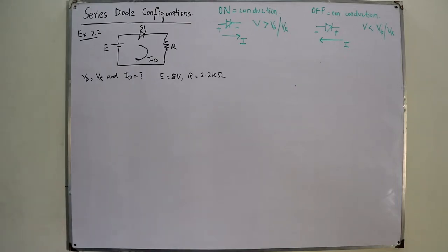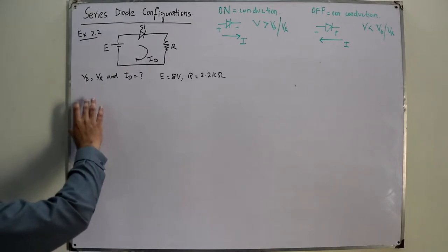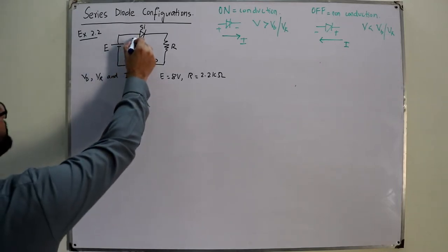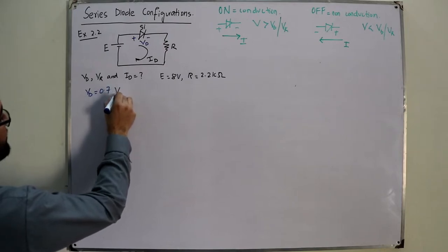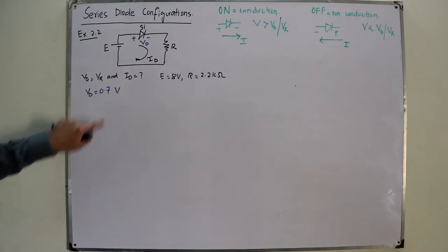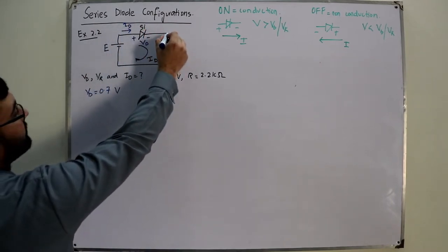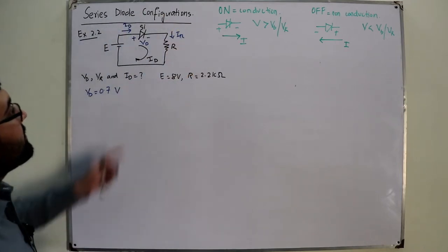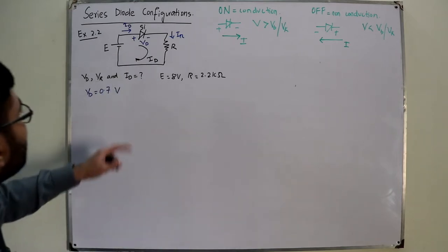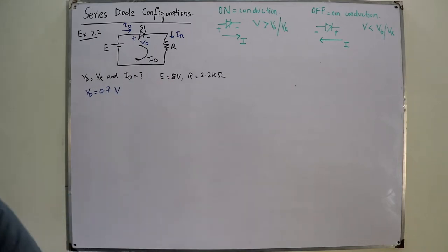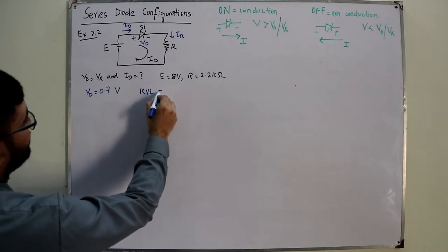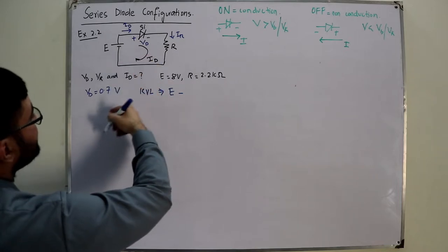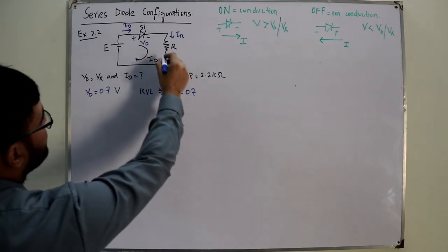The voltage across the diode VD equals its barrier potential, which for a silicon diode is 0.7 volts. VR equals ID times R. Since this is a series circuit, the current is the same throughout, named ID. Applying KVL to the loop: positive E, minus VD (0.7 volts), minus the drop across the resistor (2.2 kΩ × ID) equals zero. E is 8 volts.